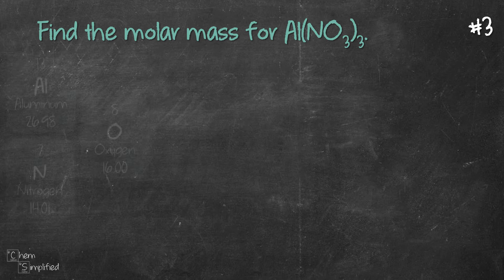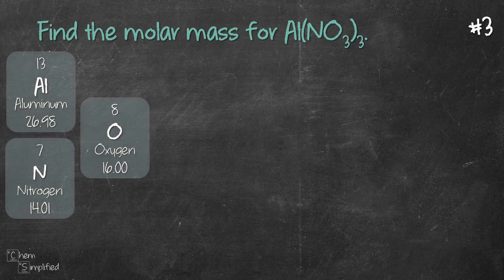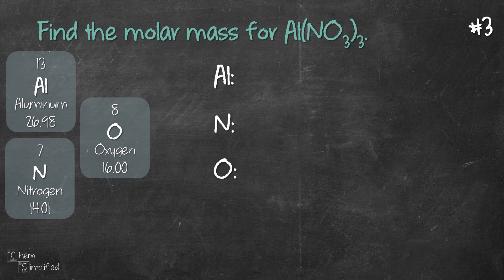So same thing, we get the info from the periodic table. Then we list out our atoms. So we have Al, N and O. We have 1 aluminum and 3 nitrogen and 9 oxygen.